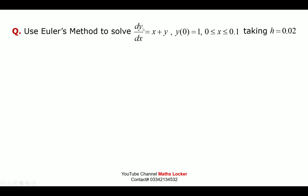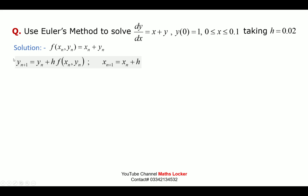Example: Use Euler's method to solve dy/dx = x + y, with y(0) = 1 — this is an initial value problem on the interval 0 to 0.1, taking h = 0.02. The solution: f(x, y) = x + y, so f(x_n, y_n) = x_n + y_n. The iteration formula is y_{n+1} = y_n + h · f(x_n, y_n), and x_{n+1} = x_n + h.